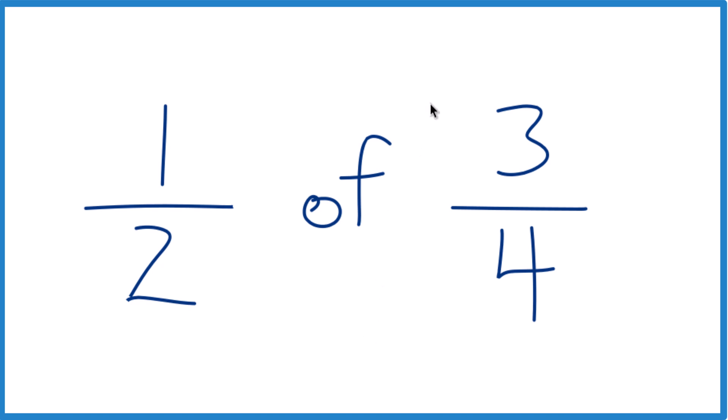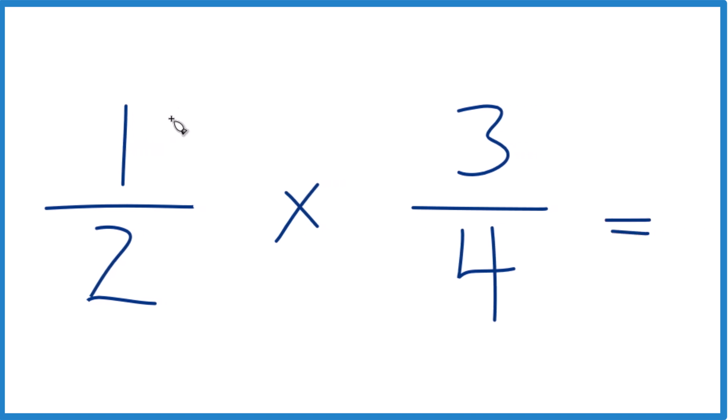So first off, when you see of here, think of multiplication. So we have one half times three fourths. Then we just multiply the numerators and then the denominators.